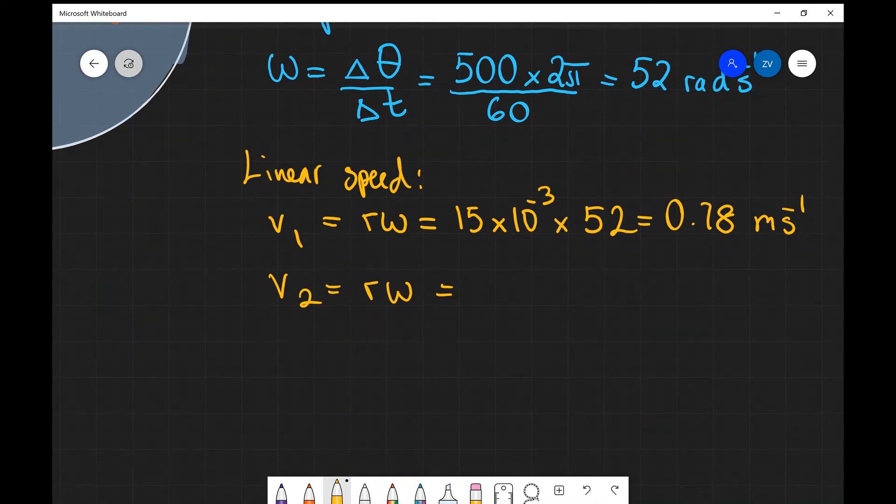So this will be 60 times 10 to the power of minus 3 multiplied by the same angular speed. Remember both points have the same angular speed, but different linear speeds. So times 52.